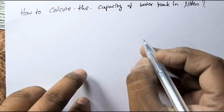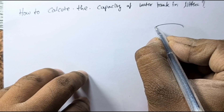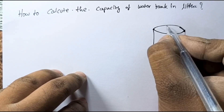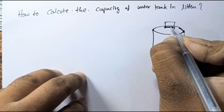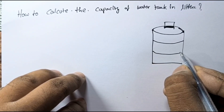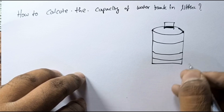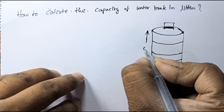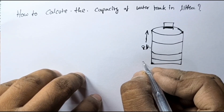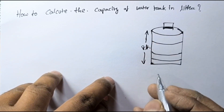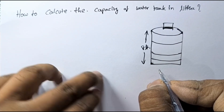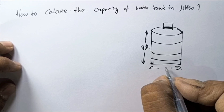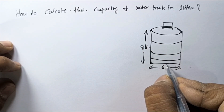First of all, we will draw one sample water tank. Assume this is a water tank, and its height is 8 feet. Length is 8 feet, and its diameter of the water tank from here to here is 6 feet.